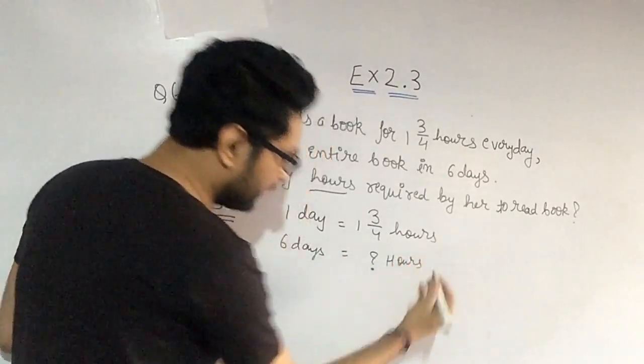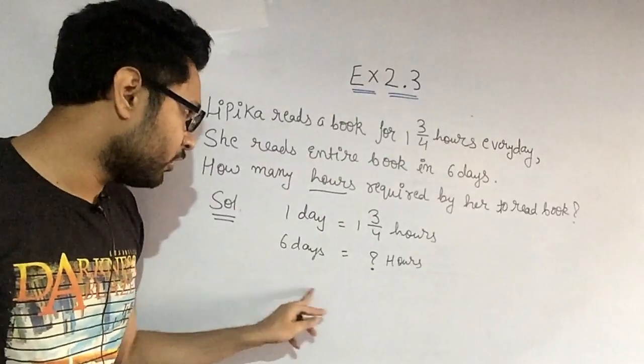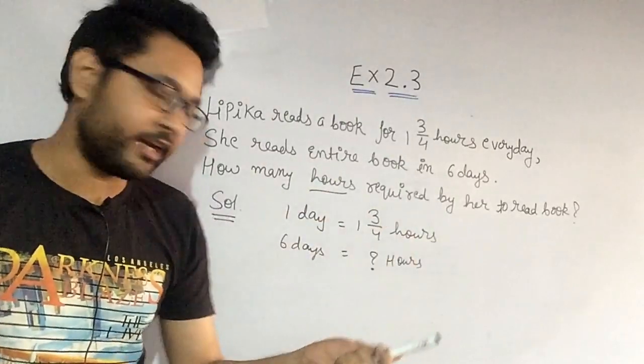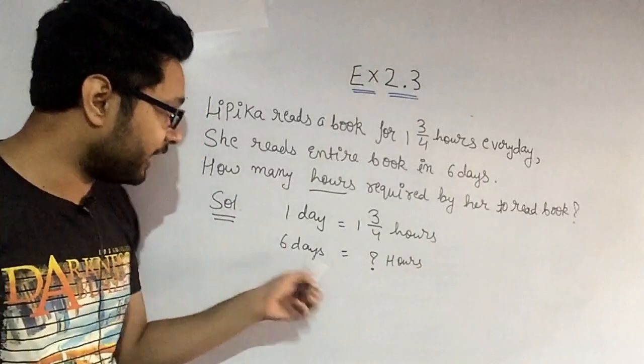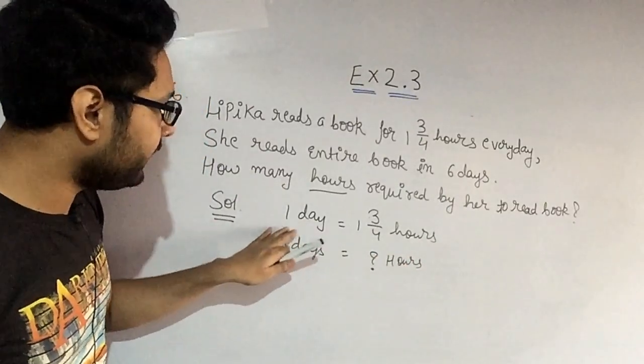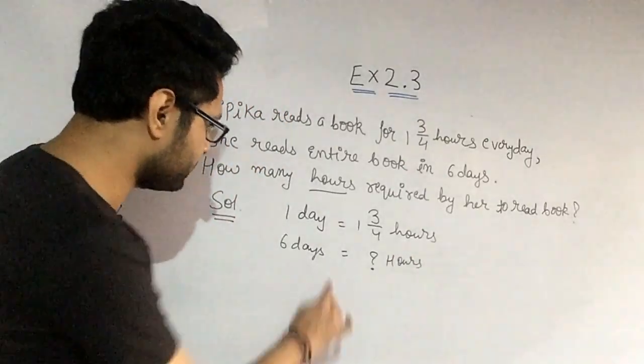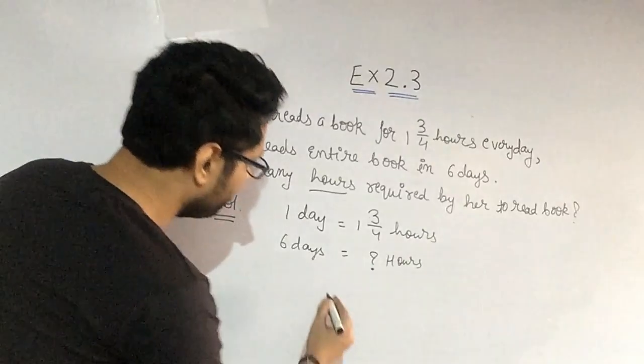How many hours do we find? What do we do? Cross multiplication, for example, one day you ate 10 chocolates, then in 5 days how many will you eat? 5 into 10. In the same way, in one day she read this many hours, in six days she will read how many hours? Six into one, three by four.